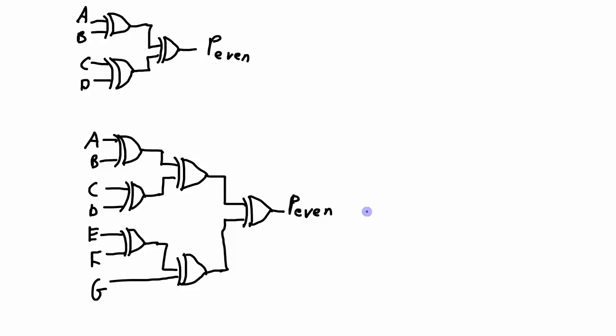If you're doing odd parity, you can use the same logic block but just add an inverter on the even parity bit output to give you the odd parity bit. Odd parity is the opposite of even parity. You can even design a system with a select bit to determine whether you want to generate even parity or odd parity.